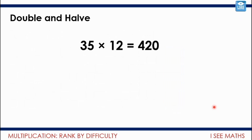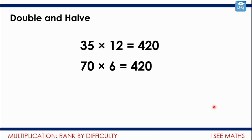This is one that we looked at yesterday — let's just recap. A double and a half. 35 times 12. Now, I didn't actually know what that was until I thought, well, what I would probably do to make this easier is double the 35 to get 70 and half the 12 to get 6. And there's a calculation that will have the same answer as that one above. So both give 420.